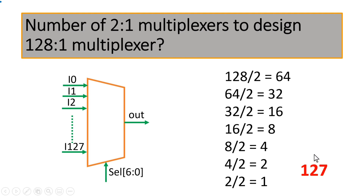This is the general formula. If someone asks how many 2-to-1 multiplexers are needed to implement a 256-to-1 multiplexer, you can easily say 256 minus 1 equals 255. In short, the total number of 2-to-1 multiplexers required to implement any higher-level multiplexer equals 1 less than the total number of inputs to that multiplexer. For our 128-to-1 case, 128 minus 1 equals 127 multiplexers.